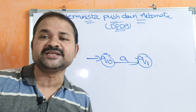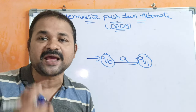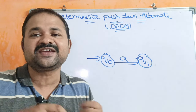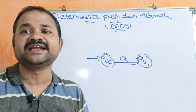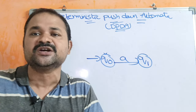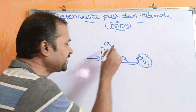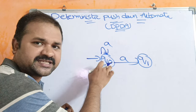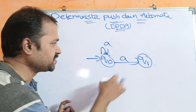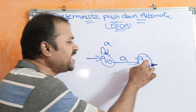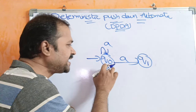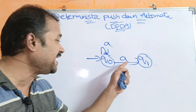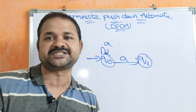Non-deterministic pushdown automata means: on applying an input symbol on the current state, if it can move to two different states, then it is called non-deterministic pushdown automata. For example, on applying A on Q0, we stay at Q0, and also traverse to Q1. So Q0 is both current and next state in one case, and Q1 is the next state in another — the same input symbol causes two different next states. This is an example of NPDA.